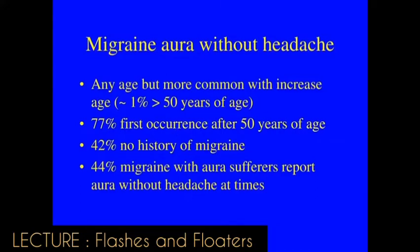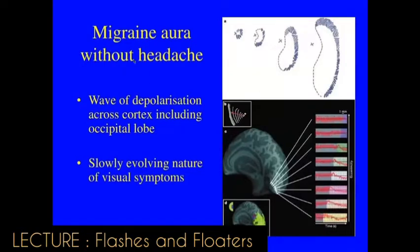Migraine can cause a migraine aura without headache. It can occur at any age but is more common with increasing age — in most patients, first occurrence is over 50 years. Notably, 45% of migraines with aura involve just visual changes without headache at times. Migraine occurs because of a wave of depolarization — electrical activity — across the occipital lobe, the part of the brain at the back that processes vision. This propagating wave creates an aura that starts small but gets bigger as the wave propagates.